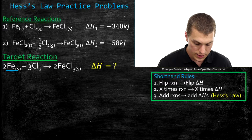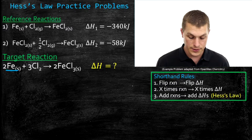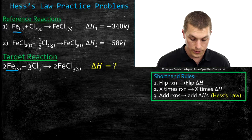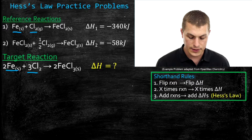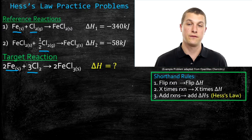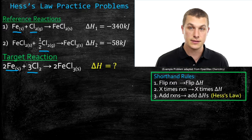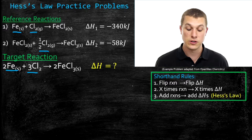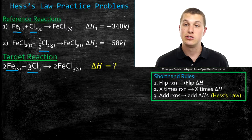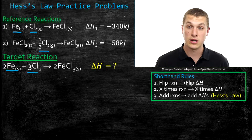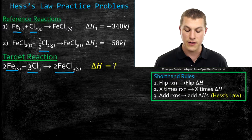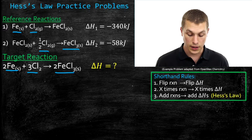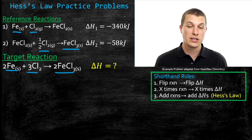I have iron down here — it's a reactant. So I'm going to look up in my reference reactions and see where iron is. It's right here, and notice it's on the reactant side, just like it is in my target reaction — that means it's on the correct side. Chlorine is on the reactant side of my target reaction, and it's on the reactant side in my reference reactions. This means I don't need to flip those reactions. If reactants in my target reaction were products in the reference reactions, I could flip them using rule one, which flips the enthalpy sign.